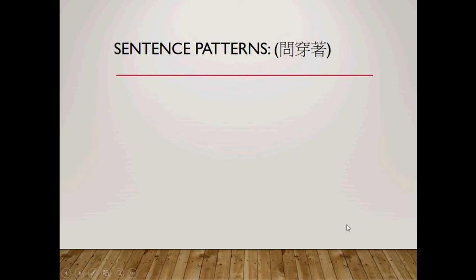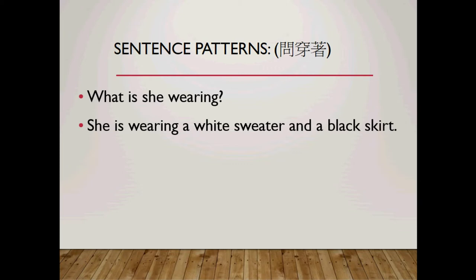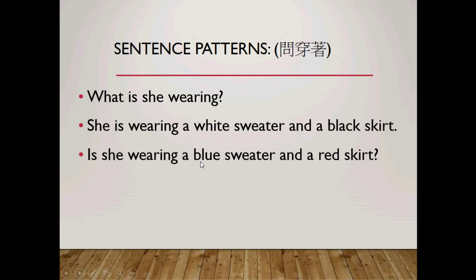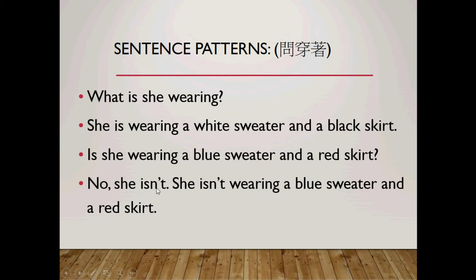Alright, let's move on to the next sentence patterns. Again, a what question: What is she wearing? The answer: she is wearing a white sweater and a black skirt. Is she wearing a blue sweater and a red skirt? Of course not. So in reply we say: No, she isn't. She isn't wearing a blue sweater and a red skirt.